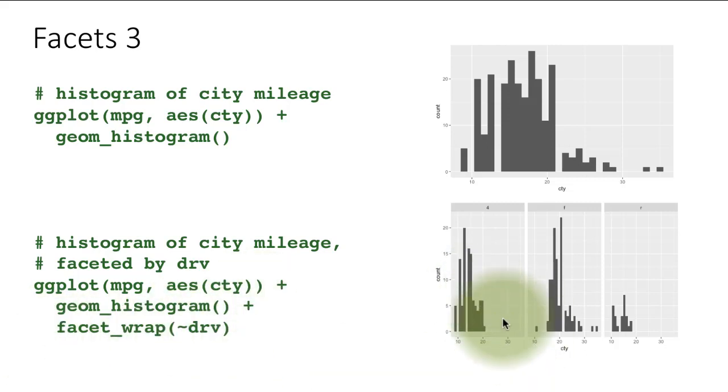The code is exactly the same as before, but we just say plus facet_wrap tilde drive, and it generates a separate plot for each value of drive. If you wanted to make the graph a little more impressive, we could have mapped color to drive as well so these three histograms would have had a different color. That doesn't really have much meaning because they're already separate, but distinguishing them by color might just make it look a little more impressive. You're seeing how easy it is to take a plot and split it up into separate plots just by adding an additional line saying facet_wrap.